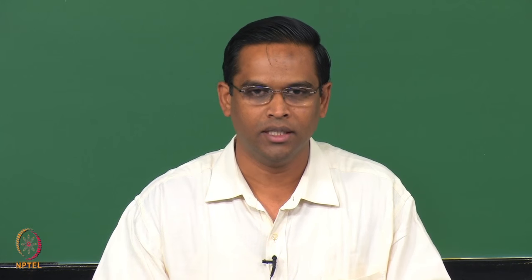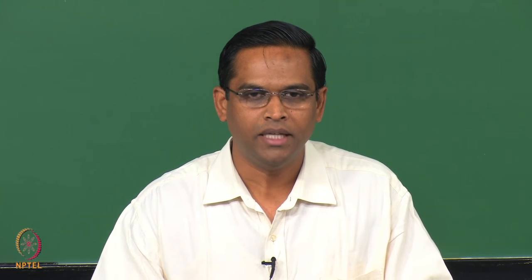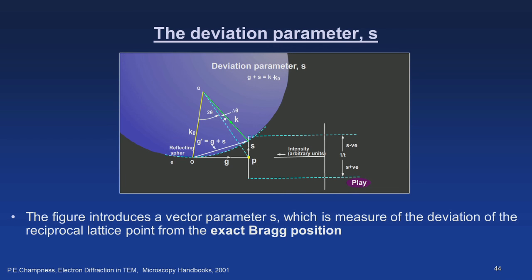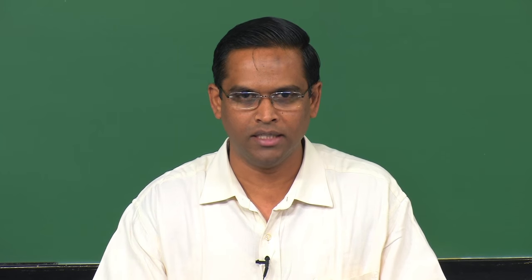Today we will continue this discussion to complete all aspects of diffraction involving the Ewald sphere as well as the reciprocal lattice. Looking at the Ewald sphere and its relation to a reciprocal lattice, another important aspect can be visualized. What I am describing in this slide is a parameter called the deviation parameter S. In XRD we discussed planes which diffract with exact Bragg condition and those which do not. Similarly, the Ewald sphere concept and reciprocal lattice demonstrate this through the deviation parameter S.